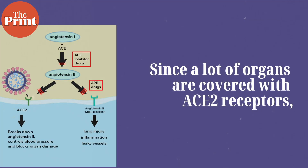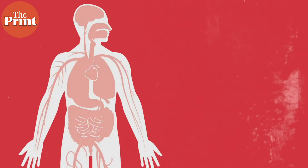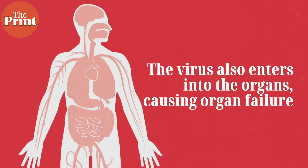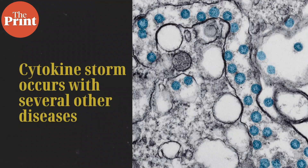This leads to inflammation, acute pneumonia, and then sepsis, where the virus spreads through the bloodstream to other organs. Since many organs are covered with the ACE2 receptors that the virus uses to enter our nasal cavity and lungs, the virus also enters other organs, eventually causing organ failure or thrombosis, which is excessive blood clotting.